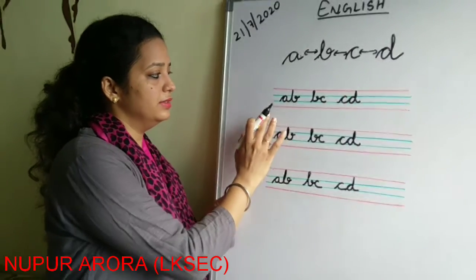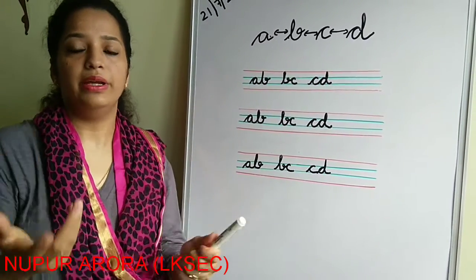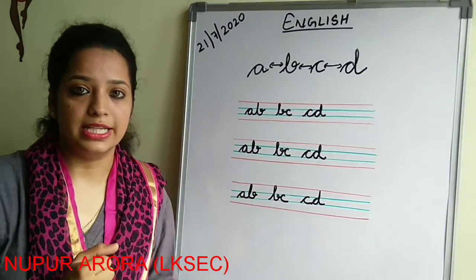And after learning this two two letters, hum aur big letters join karenge, jiaise four letters, eight, up to eight letters you will learn it.